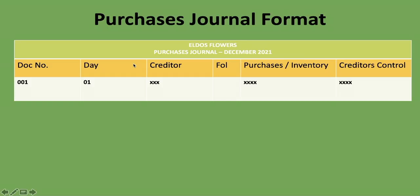The first column is the document number, sometimes written as invoice number. This is where you put the invoice number for each transaction for goods bought on credit. If you are not given the document number, you can write it in sequence: 01 for the first, 02 for the second, and so on.